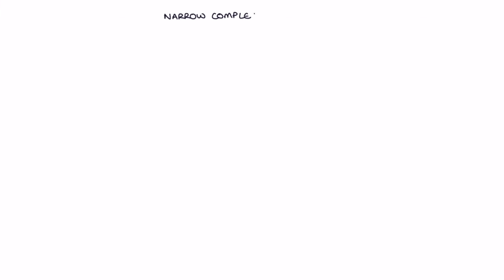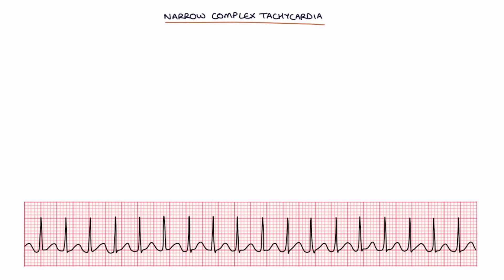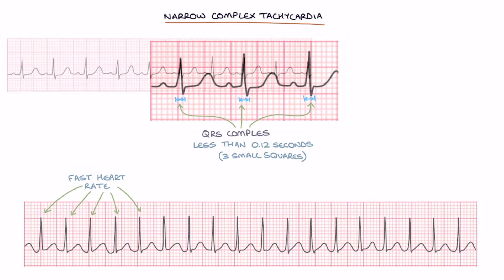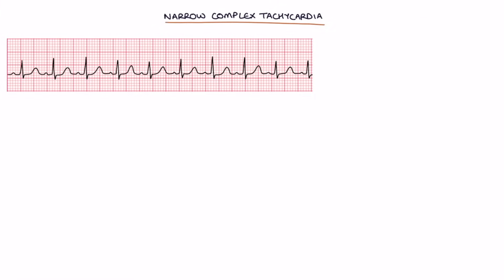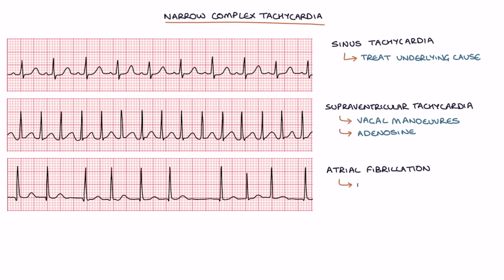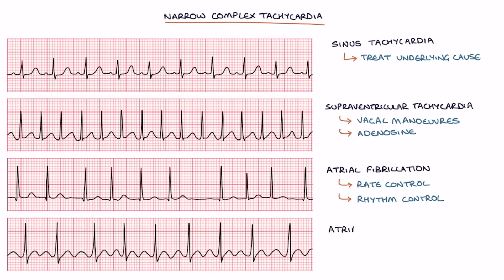Narrow complex tachycardia refers to a fast heart rate with a QRS complex duration of less than 0.12 seconds. On a normal 25mm per second ECG, 0.12 seconds equals three small squares. There are four main differentials: sinus tachycardia, treated by addressing the underlying cause; supraventricular tachycardia, treated with vagal maneuvers and adenosine; atrial fibrillation, treated with rate or rhythm control; and atrial flutter, also treated with rate or rhythm control.